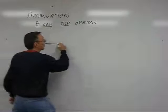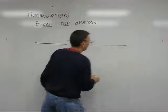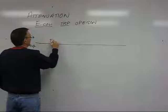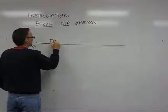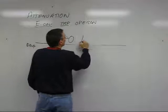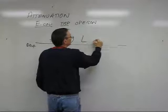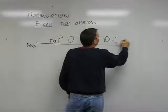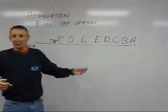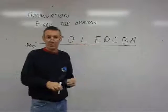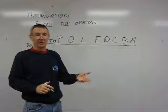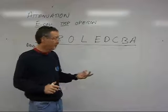If we look at the E. coli trp operon, we have here in the DNA a promoter, an operator, a leader sequence which we'll come back to, and then a series of structural genes — trpE, trpD, trpC, trpB, trpA — which code for polypeptides that make up a series of enzymes required for the synthesis of tryptophan.